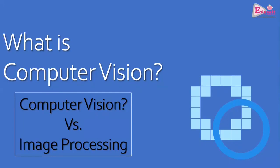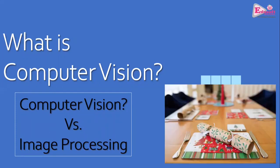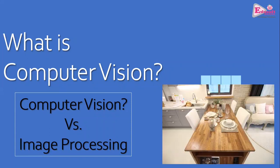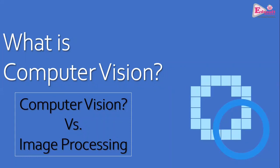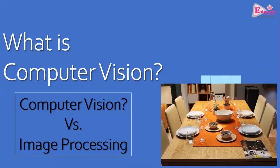Computers do not perceive images like human beings do. When I look at a table from a particular angle or distance, or if I'm shown a photograph of it later, I can still identify it as a table. But with machines, things are not that easy or instant — machines understand images in a very different way.